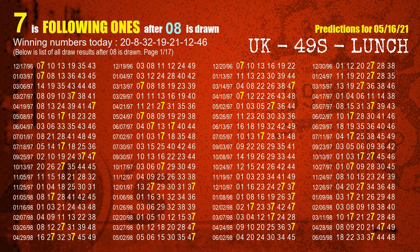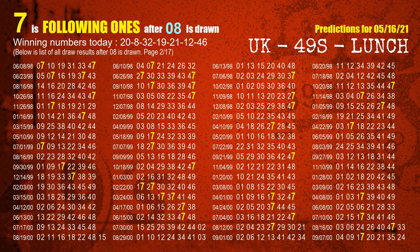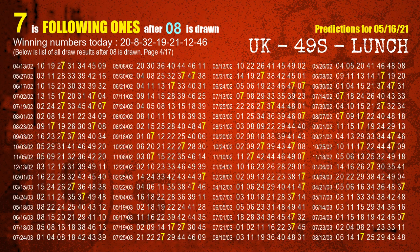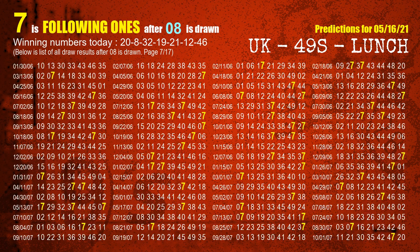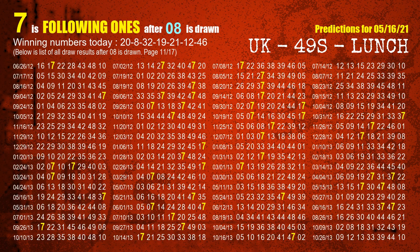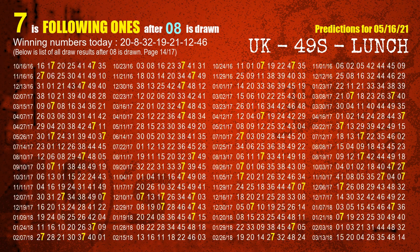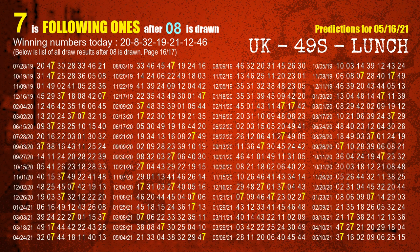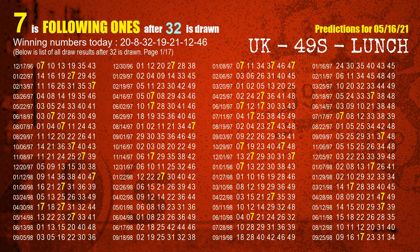The second winning number is 08. The most frequently following units digit is 7 when 08 is the winning number in the last draw. The third winning number is 32. The most frequently following units digit is 7 when 32 is the winning number in the last draw.